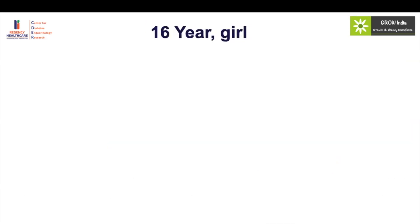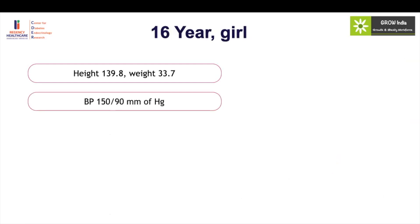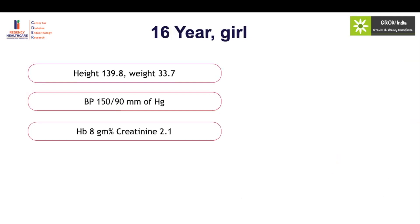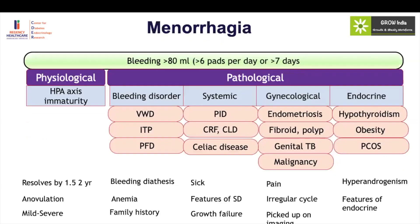Coming back to our girl who had severe menorrhagia and severe anemia — she was worked up and had a little growth failure with short stature and asthenia, very low body weight, hypertension, and moderate anemia. She was a case of chronic kidney disease. Her ultrasound workup was normal. So it is very important to identify systemic diseases in pubertal girls with menorrhagia and rule them out, because a normal ultrasound does not mean that this girl does not have a pathology.